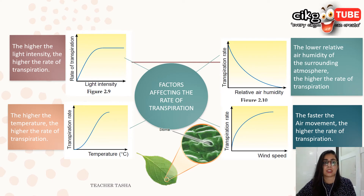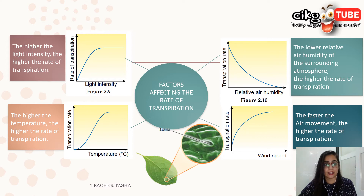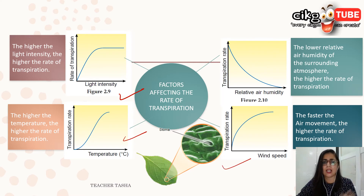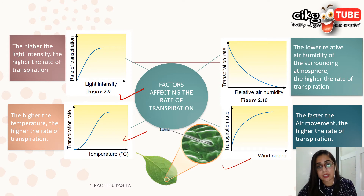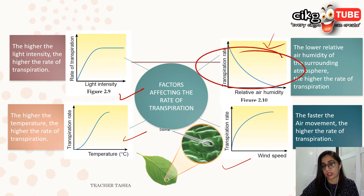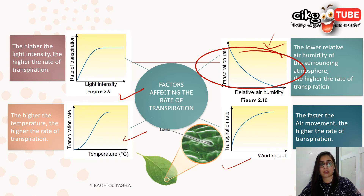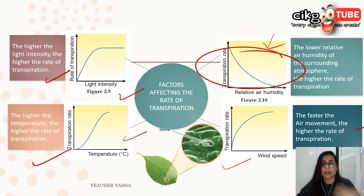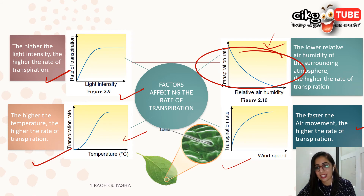Looking at the graphs: the rate of transpiration increases when light intensity is high, temperature is high, and wind speed is high — all increase until a certain level, after which other limiting factors cause the rate to become constant. For relative humidity, as it increases the transpiration rate decreases — this is the only factor that is different. To summarize: higher light intensity, higher temperature, and faster air movement all increase transpiration, but lower air humidity increases transpiration.